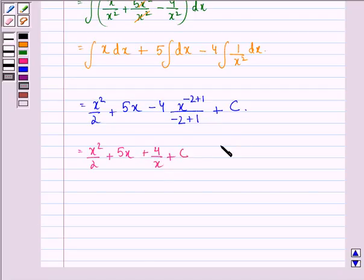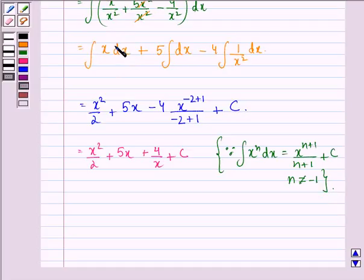We know that the integral of x^n dx equals x^(n+1)/(n+1) + C, where n is not equal to -1. In the first integral we see that n equals 1, so we get x^2/2. In the second integral, it is equivalent to x^0, so n becomes 0 and we get x.